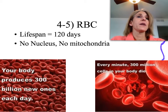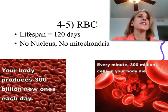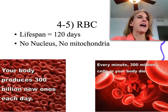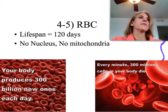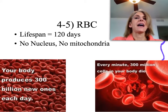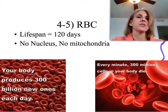Red blood cells: because they don't have a nucleus, they don't reproduce — they do have a lifespan, typically 120 days. No mitochondria means they can carry oxygen without using it for cellular respiration, so they're not using up the oxygen they carry. Trivia: every minute, 300 million cells in your body die, and your body produces 300 million — but you don't need to know that.